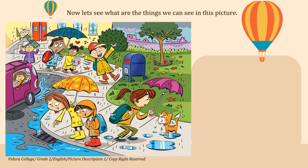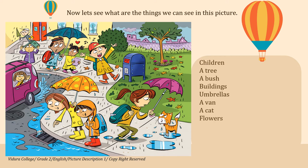Here are some of the things that we can see in this picture. We can see children, a tree, a bush, buildings, umbrellas, a van, a cat, flowers, water puddles, a paper board, a mailbox, and books.